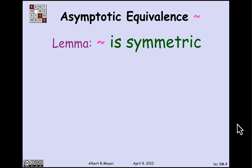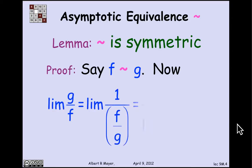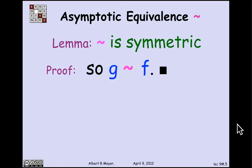There are some easy properties of asymptotic equality that follow immediately from the definition. One of them is that it's symmetric. Suppose that f is asymptotically equal to g. I want to prove that g is asymptotically equal to f. The limit of g/f by algebra is the same as 1 over f/g. Moving the limit across the division, that's the same as 1 over the limit of f/g, which is 1/1. We've proved that g is asymptotically equal to f given that f is asymptotically equal to g. It's symmetric.